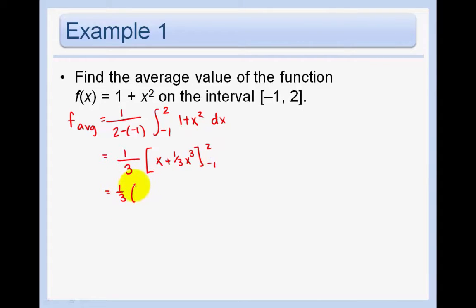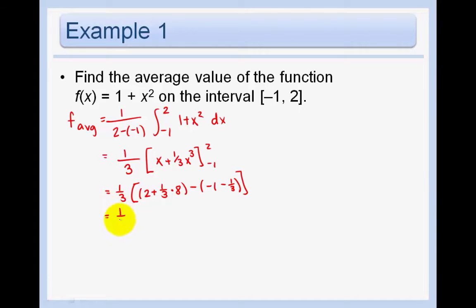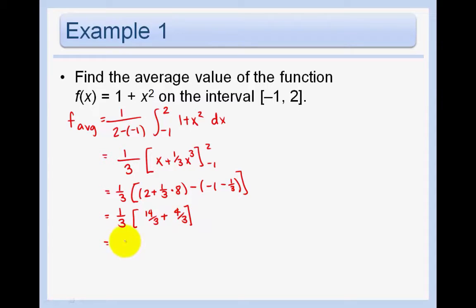So that is one-third. Let's stick in a 2 everywhere, and then stick in a negative 1. And so we're left with one-third times 14 thirds plus 4 thirds. In other words, one-third times 18 thirds, which would be just 2. So that is the average value of our function.